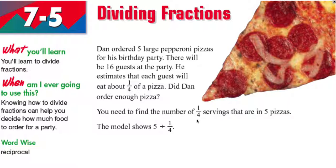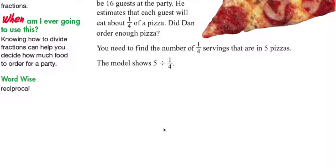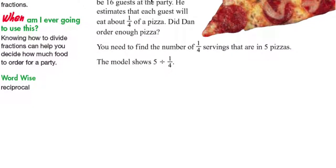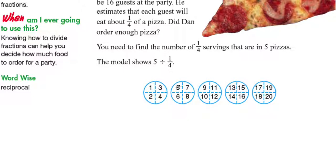If you want to find the number of one-fourth servings in five pizzas, you're simply saying to model five divided by one-fourth. So five divided by one-fourth looks something like this: you have five pizzas and you divide them into fourths.